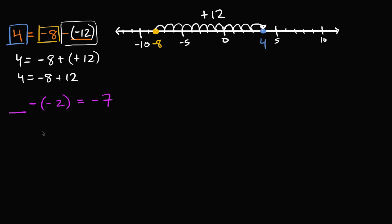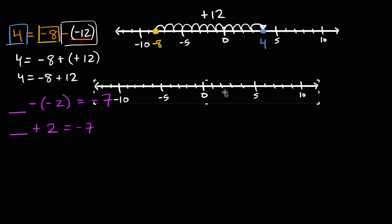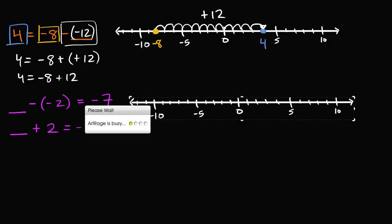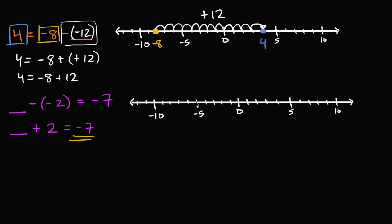How do we think about this? Well, the first thing my brain wants to do is to simplify subtracting a negative. If you subtract negative two, that's the same thing as adding positive two. So this is an equivalent statement: something plus two is equal to negative seven. Now we can get the number line out. My goal is to get to negative seven, and I want to add two to something to get there. If I'm adding two, that means I'm jumping two to the right. So what number do I need to start at so that if I add two, I end up at negative seven?